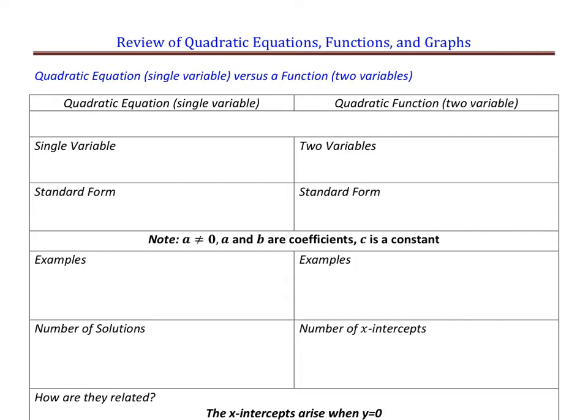The first thing I want to show you is the difference between a quadratic equation and a quadratic function. Both of them are equations, so they do have an equal sign in them. A quadratic equation is generally describing a single variable. In a quadratic function — function meaning input-output, almost like a linear function — it would be a two-variable relationship.